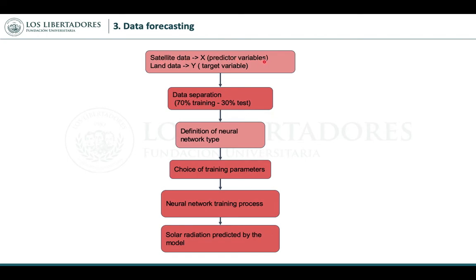The third stage is data forecasting. Our predictor variable is the satellite data and our target variable is the land data. We use 87% of data for training and 13% for test. Next comes definition of the neural network type and its training parameters, followed by the neural network training process, which gives us a solar radiation predictor from the model.